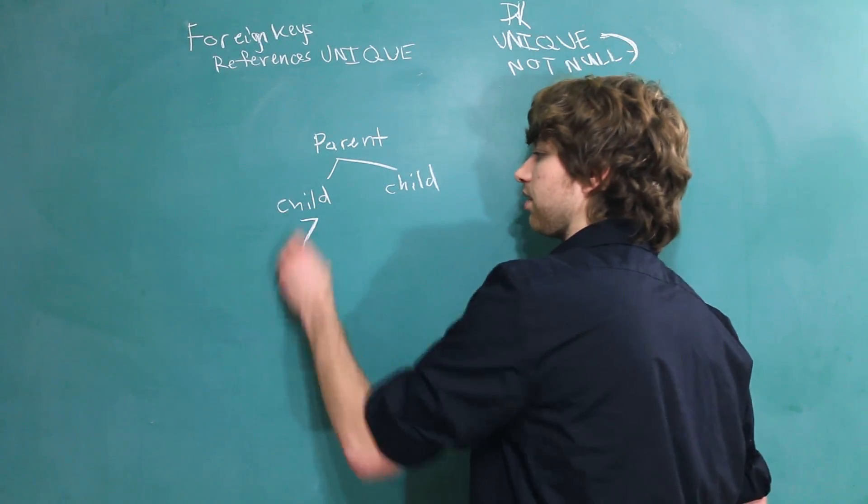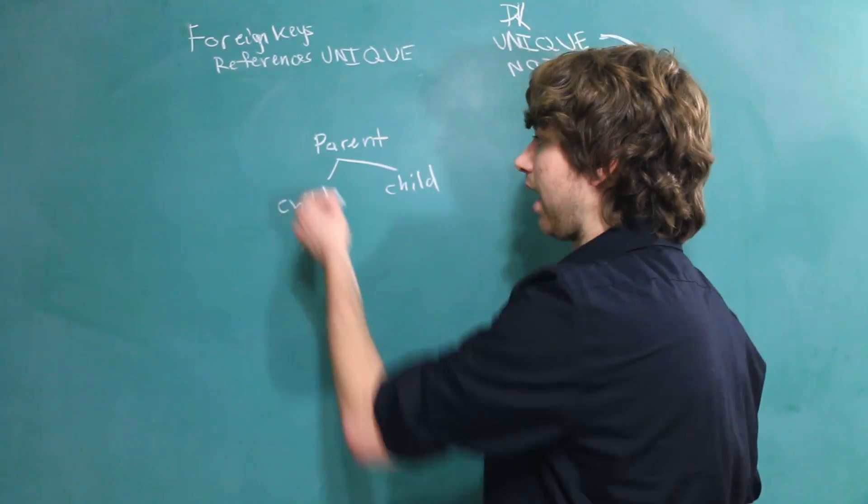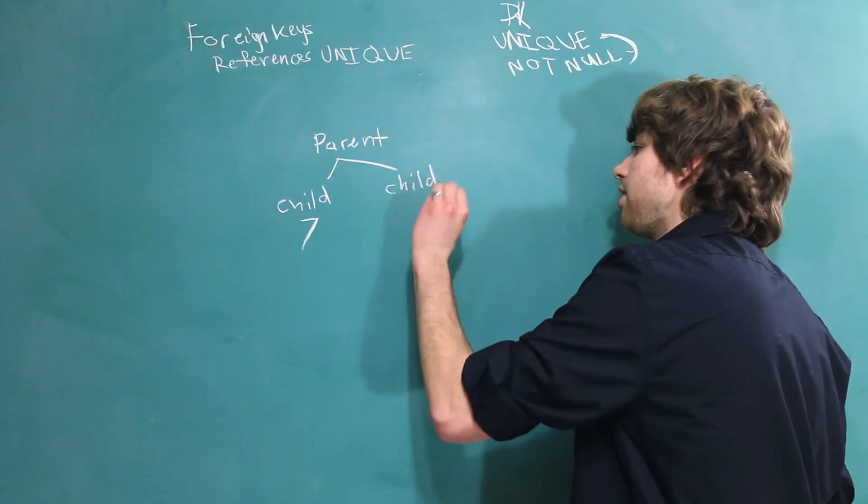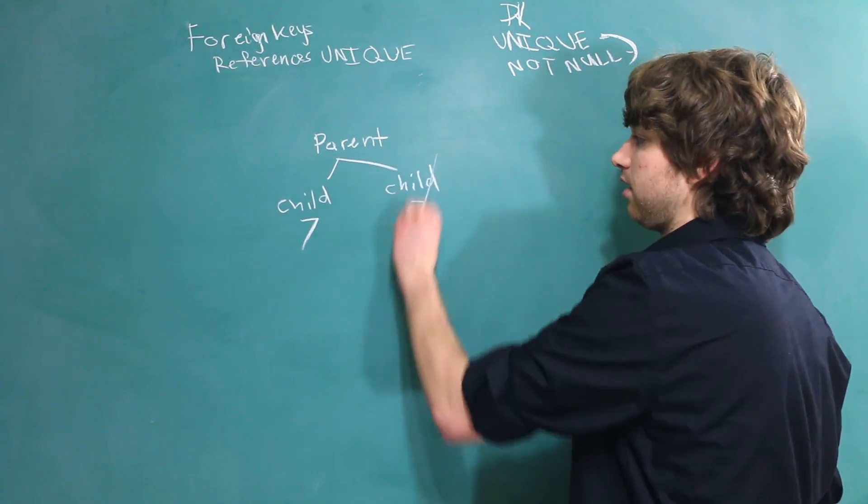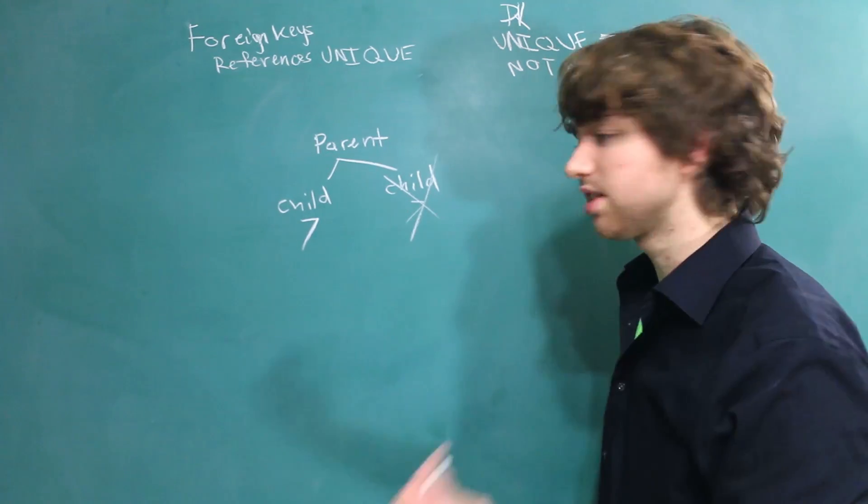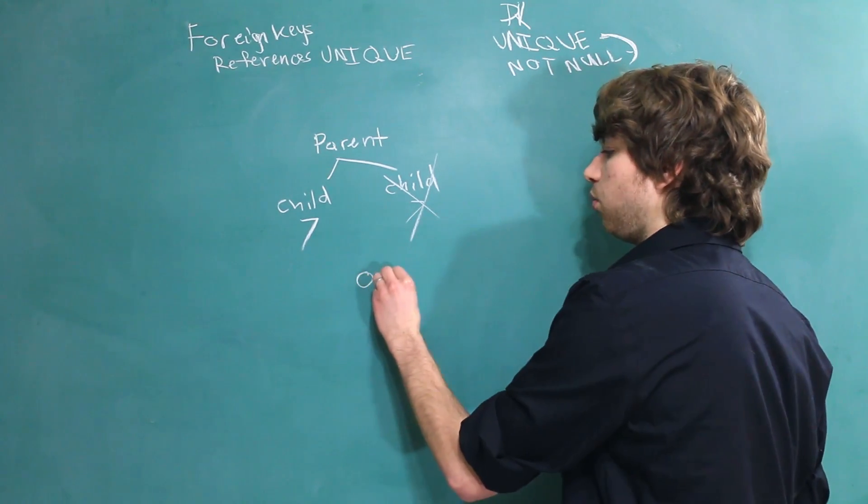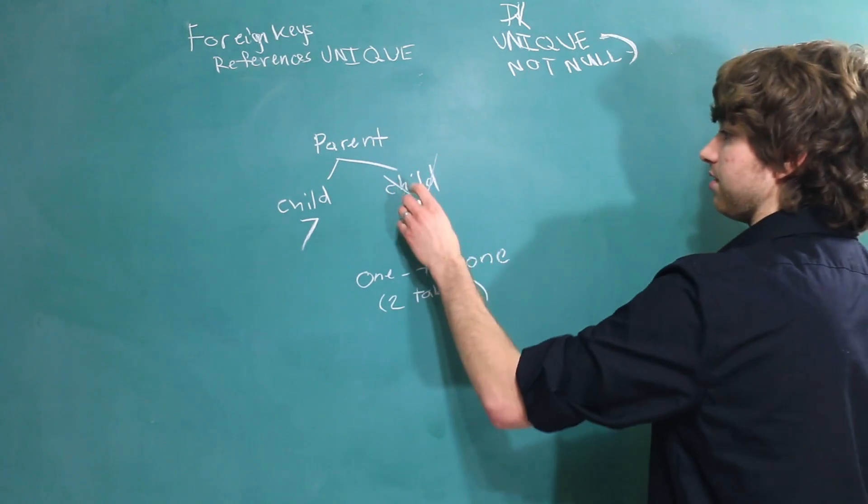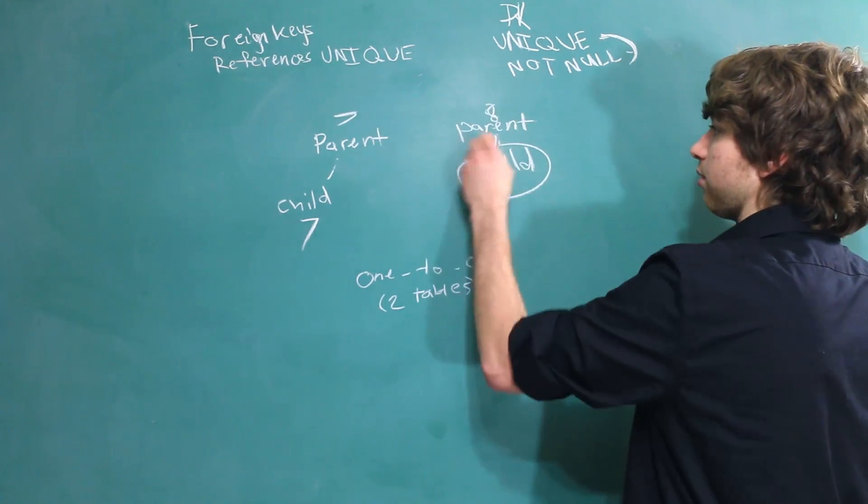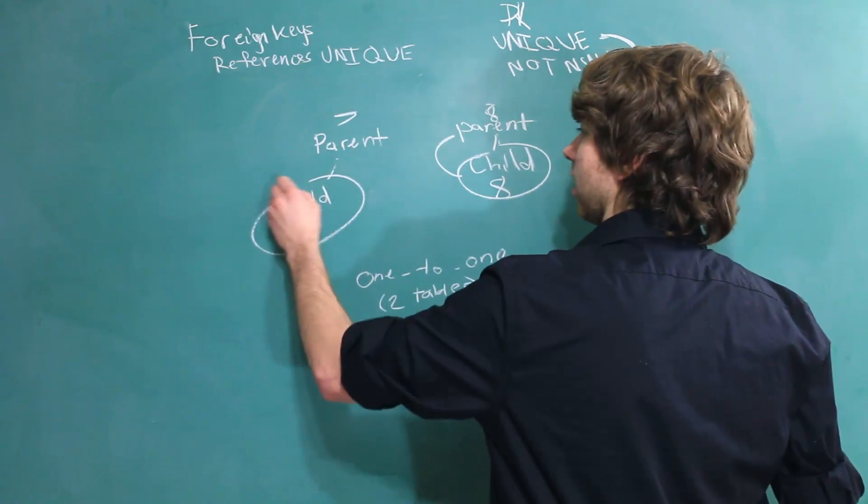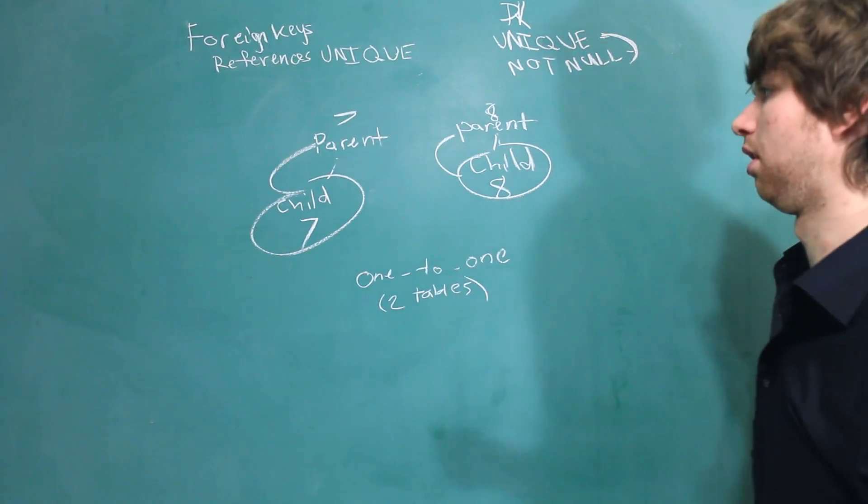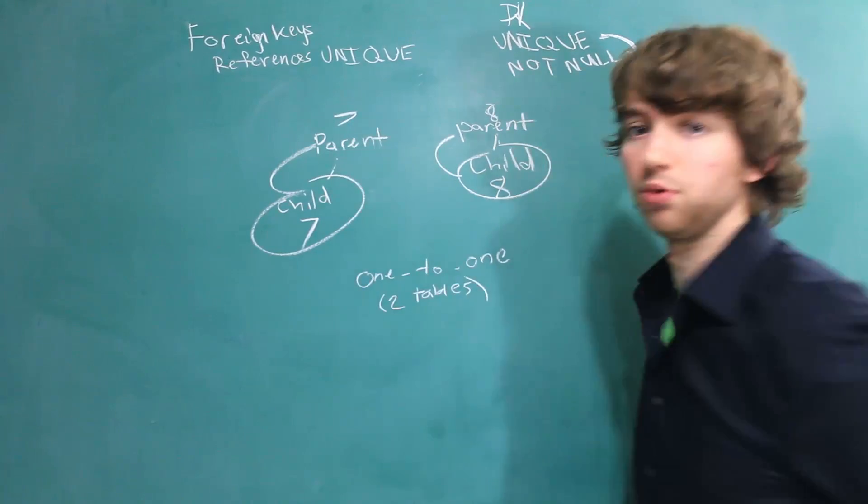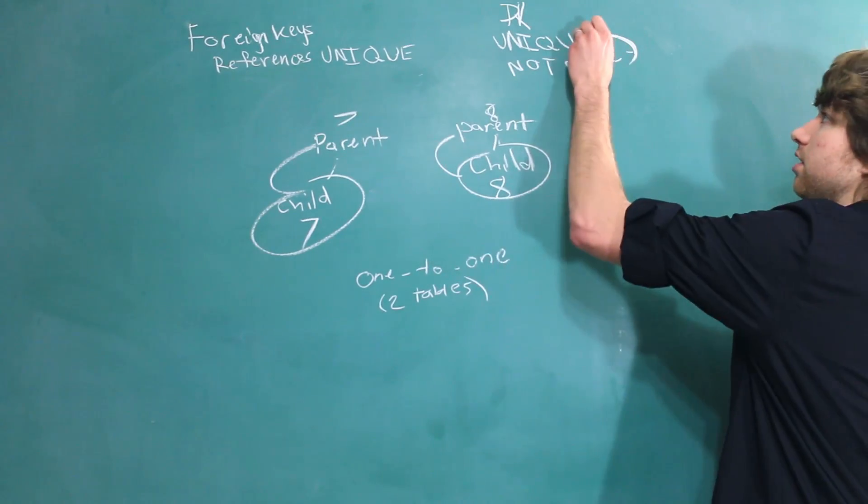That means if we have a child with like the ID of 7 referencing the parent, we cannot have another child referencing the same parent. That would not work. This is basically the way you design a one-to-one relationship over two tables. That means this child is going to have to reference a different parent. So, here the child references the parent, and here the child references the parent. But we can't have two children referencing one parent. That's what the unique constraint will do.